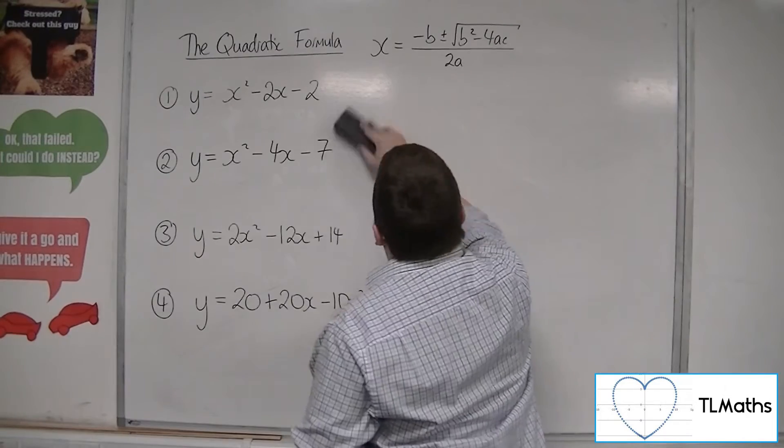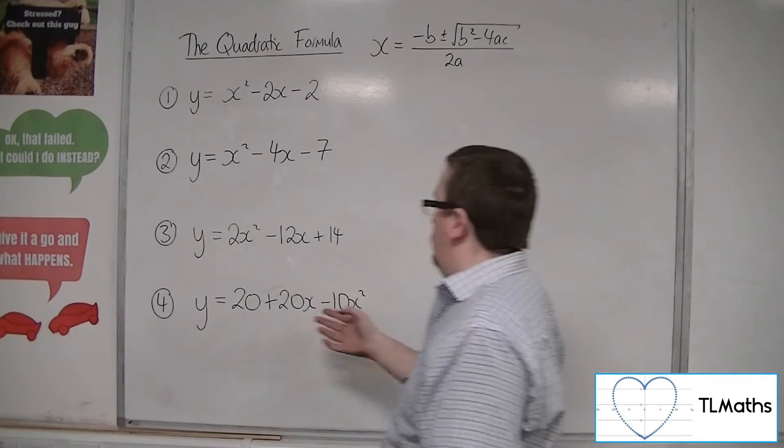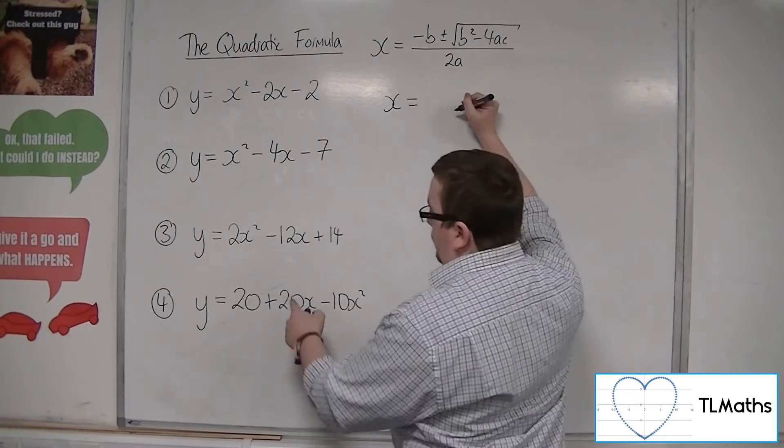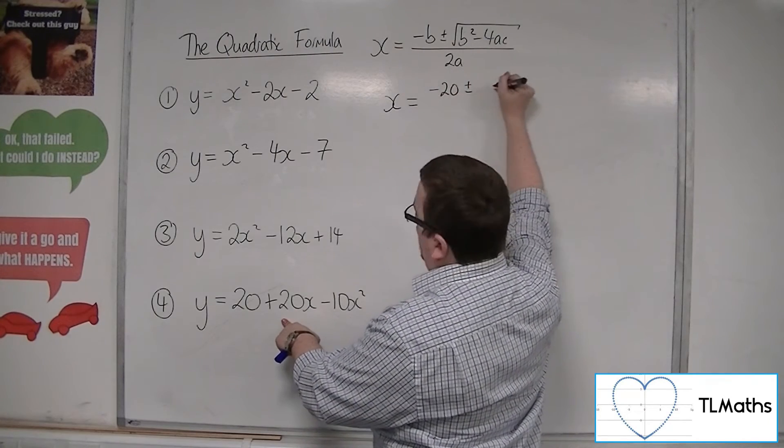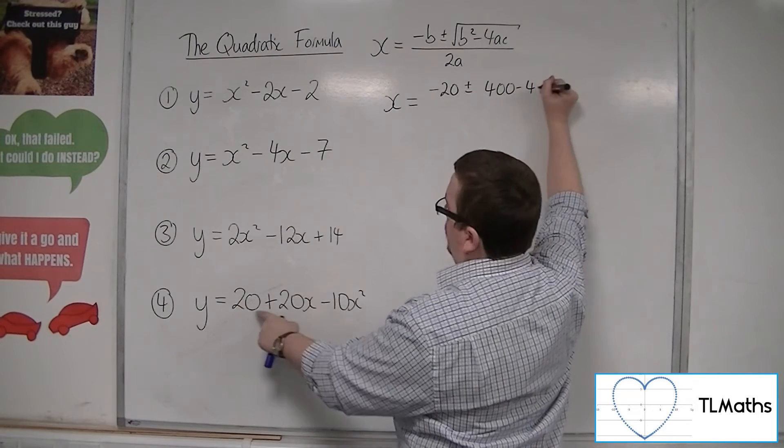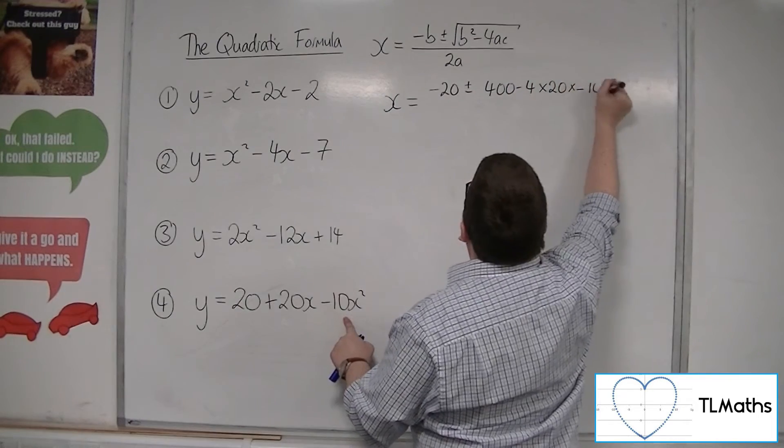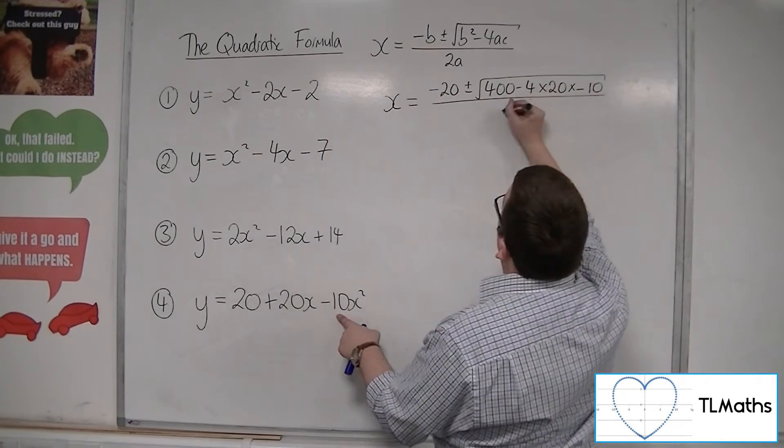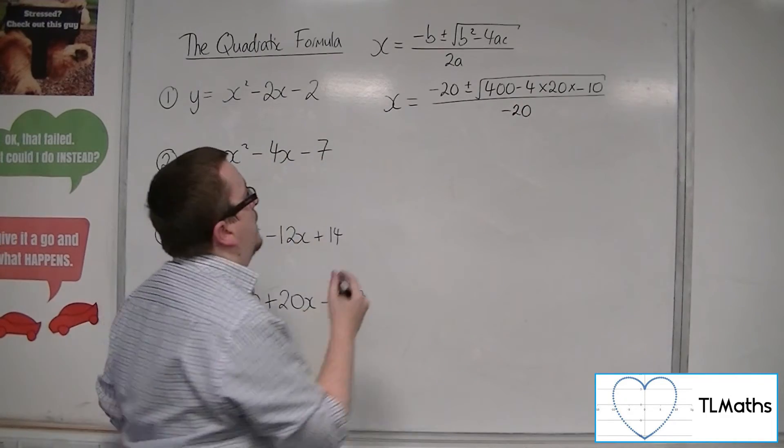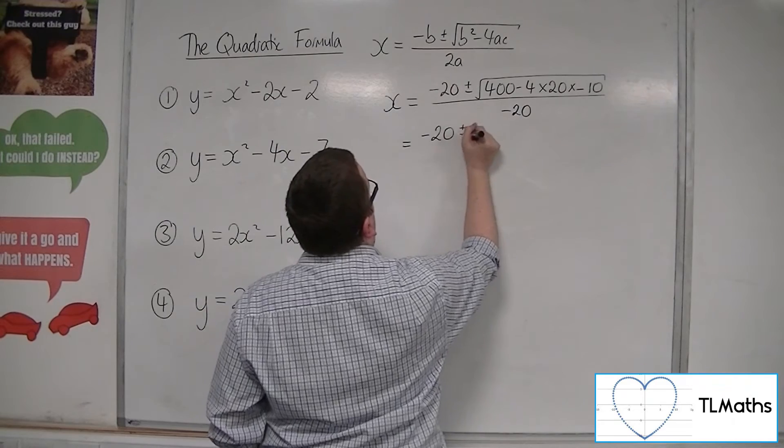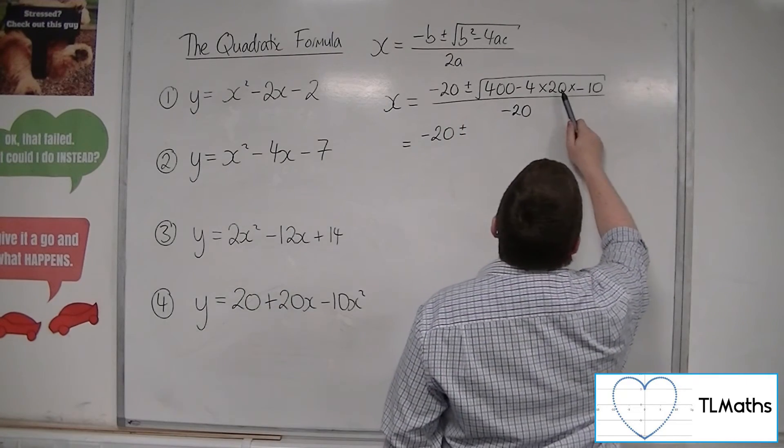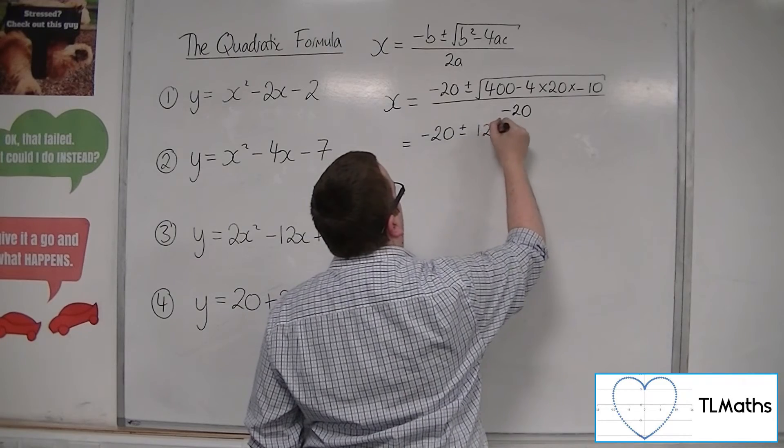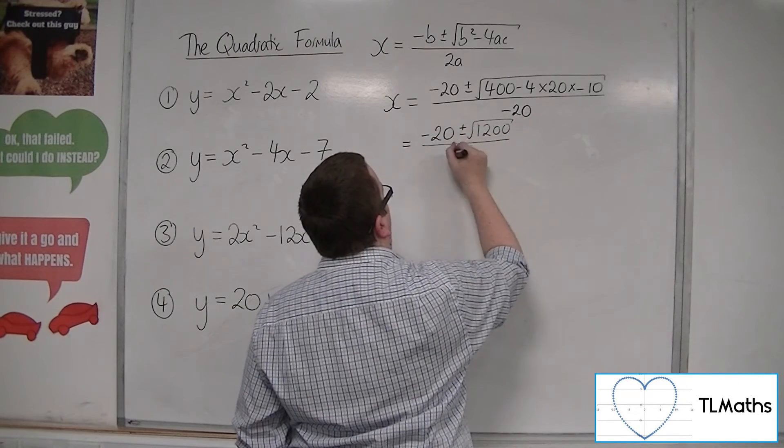So finally, we've got this y is equal to 20 plus 20x minus 10x squared. So x is equal to minus b, so minus 20, plus or minus b squared, so 400, take away 4 times 20 times minus 10. Square rooted, all over 2a, so 2 lots of minus 10, so minus 20. So minus 20, plus or minus. Well, we've got here 4 twenties at 80, times by 10 is 800. So we've got 1200, so we've got 1200 square rooted, all over minus 20.